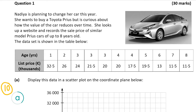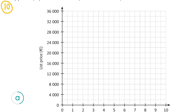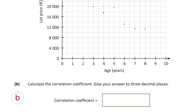Remember that correlation does not imply causation. The age is on the x-axis and the list price in thousands is on the y-axis. Our first coordinate is (1, 32.5) since the age is 1 and the list price is 32.5 thousand euro. We continue plotting: (2, 26), (3, 24), (3, 21.5), and so on until we have all 11 coordinates in the scatter plot, which should look something like this.